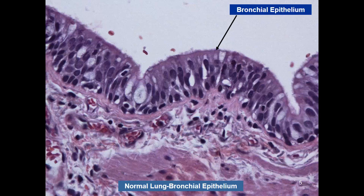Tumors arising from the submucosal glands are usually adenocarcinomas. The other cells that give rise to malignancy are neuroendocrine cells — the origin of small cell carcinoma. Normal neuroendocrine cells are within the airway linings. If you do neuroendocrine markers, some small cells will stain positive. These are where you get small cell, large cell neuroendocrine tumors, atypical carcinoid, carcinoid, and diffuse neuroendocrine cell hyperplasia — they all arise from these areas.